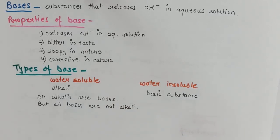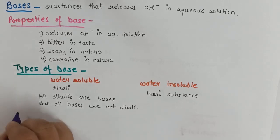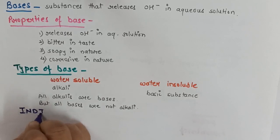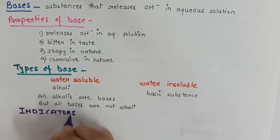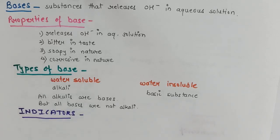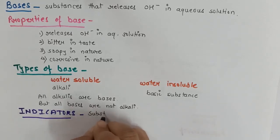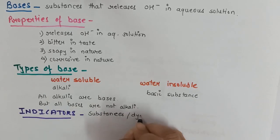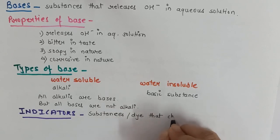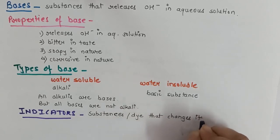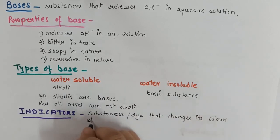Now suppose in a chemistry lab, one test tube has acid and another has base — both are colorless. Then how are you going to identify them? The identification becomes a little difficult if we don't touch them, and therefore we take the help of indicators. Indicators are substances or dyes that change their color when they come in contact with acidic or basic medium.